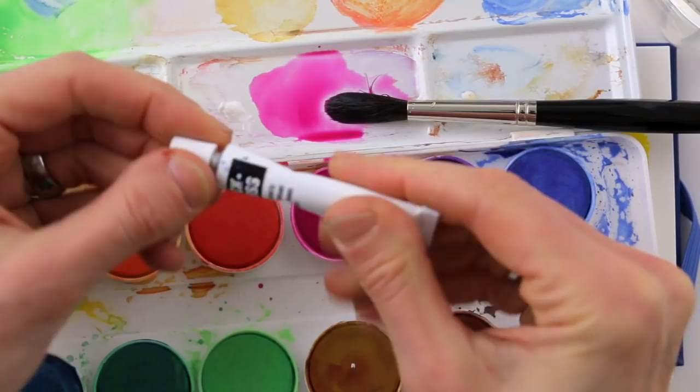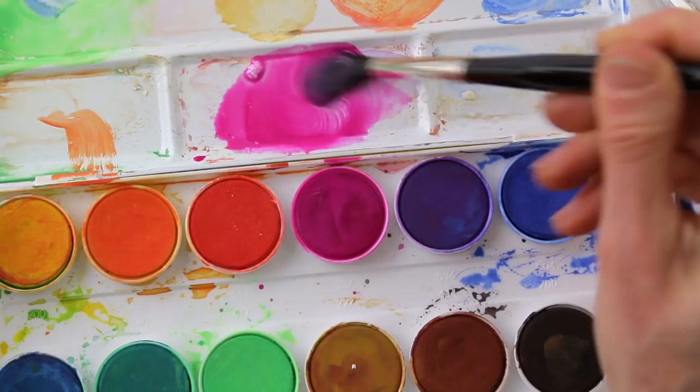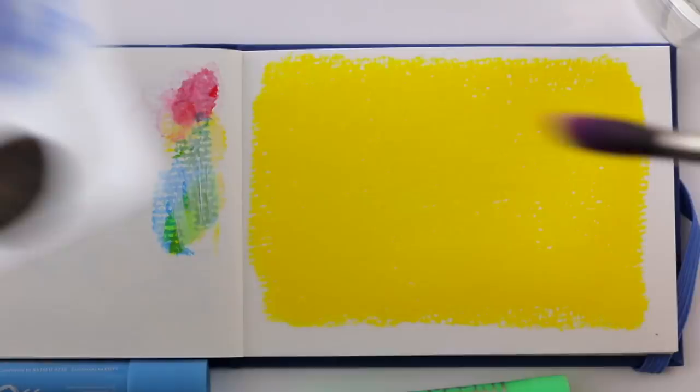Now this gouache set is just very cheap and probably gouache from tubes is more opaque and bright. But you'll still need water and a brush to mix and apply it.